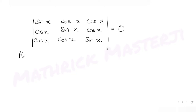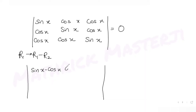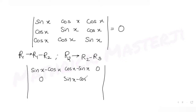Applying R1 → R1 minus R2: the first row becomes sin x minus cos x, cos x minus sin x, and zero. Then applying R2 → R2 minus R3: cos x minus cos x gives zero, sin x minus cos x, and cos x minus sin x. The third row stays as cos x, cos x, sin x, and the determinant equals zero.